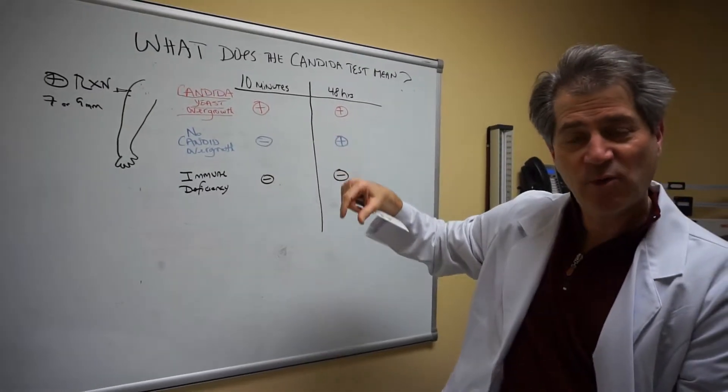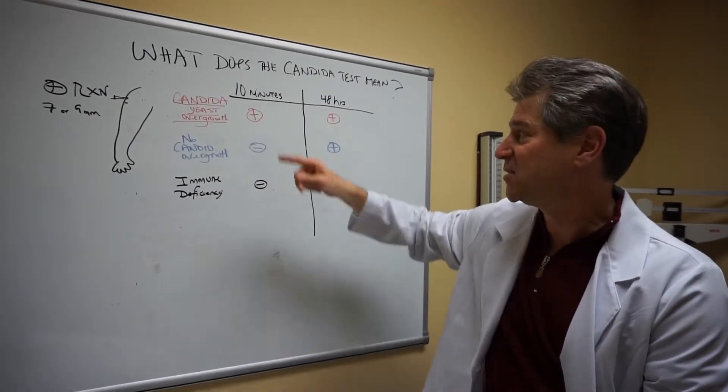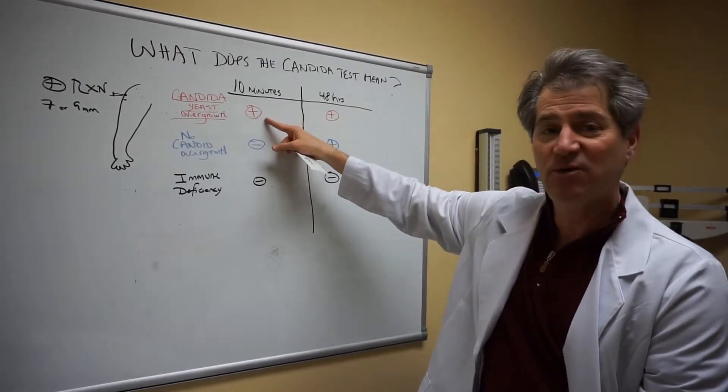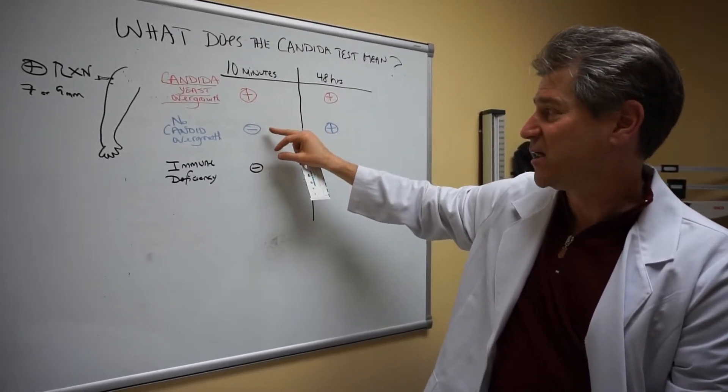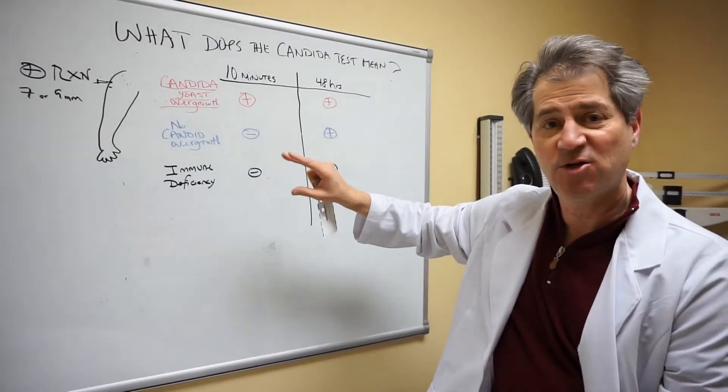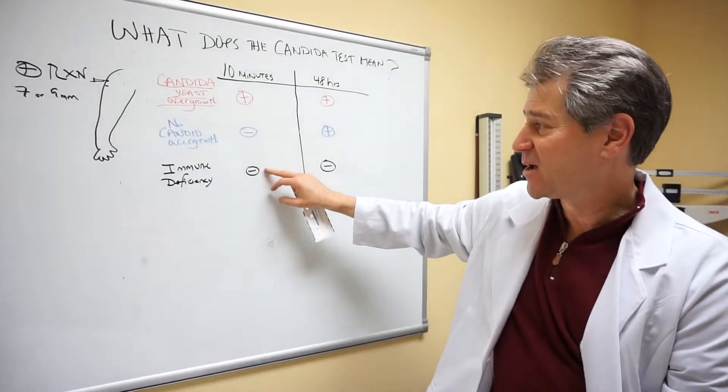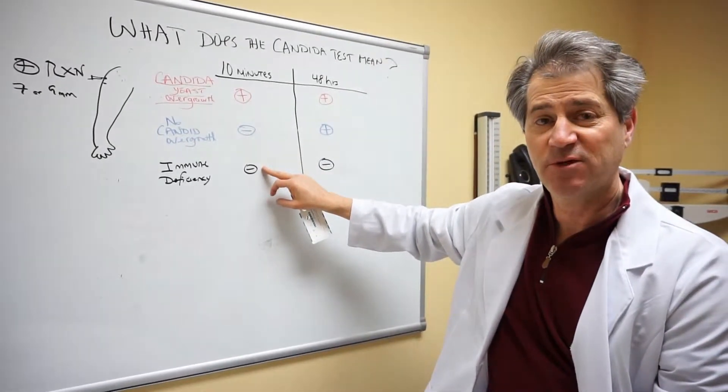Now everyone has candida in their body, but if there's too much and it's out of balance, you will get this immediate reaction. A person that's really in excellent balance in that 10-minute period will have no reaction. The other kind of person that will not have any reaction is a patient with immune deficiency.